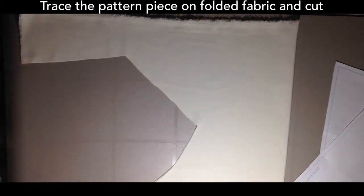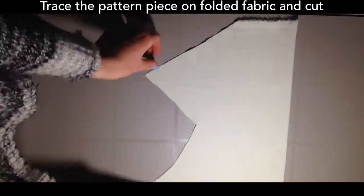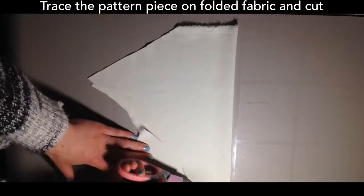And then I trace them with pencil, which is why you can't see, and then cut them out on the fabric. So in the end you'll have eight pieces because I doubled it so it would be seamless and I wouldn't have to hem anything.